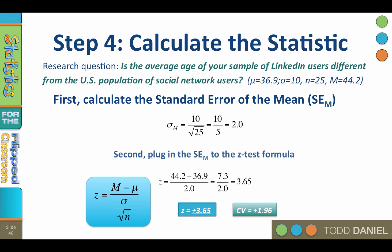And our critical value, you will remember, is positive 1.96. Clearly, our z of 3.65 is further away from the z-distribution mean of 0 than the critical value of 1.96.